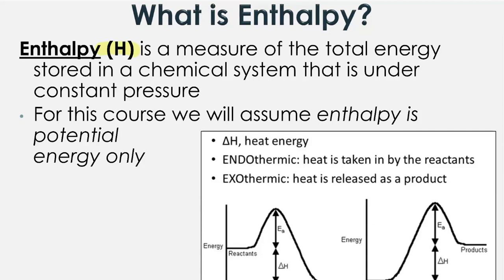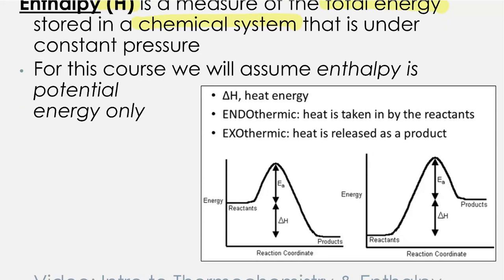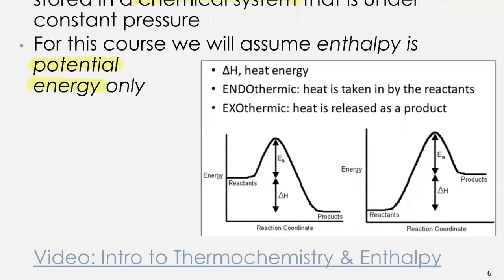In Chem 30, whenever we're talking about enthalpy, just be aware that we're referring to only the potential energy — specifically chemical potential energy, which is the energy stored by the position of the bonds of different molecules. So enthalpy is looking at what energy is stored in these bonds, and we're also going to look at some of the changes that happen due to that.